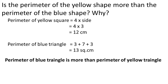Perimeter of blue triangle is more than the perimeter of yellow square, because perimeter of blue triangle is 13 while perimeter of yellow square is 12. So, which one has more perimeter? Perimeter of blue triangle is more than the perimeter of yellow square.